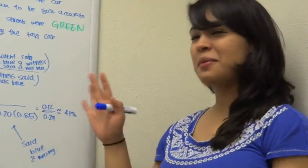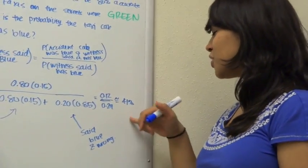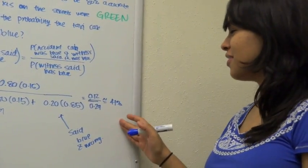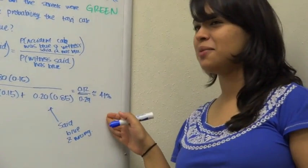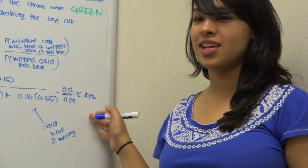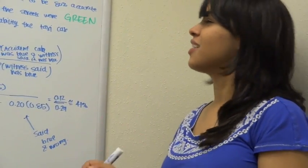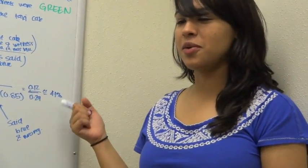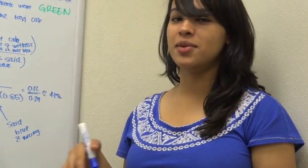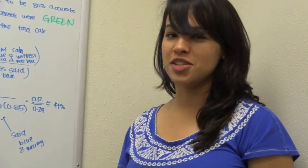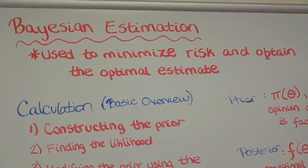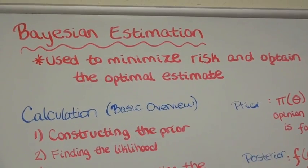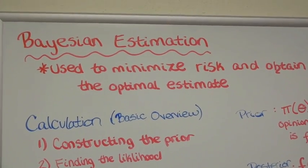Note that if we rely solely on the witness's information, they are only accurate 41% of the time. That's not a high chance — knowing the witness said it was blue or green, they would only be correct 41% of the time, so relying on them alone is not enough information to prove the case. With that, we've reviewed Bayes theorem in order to expand on it and introduce Bayesian estimation, which is used to minimize risk and obtain the optimal estimate for some data.